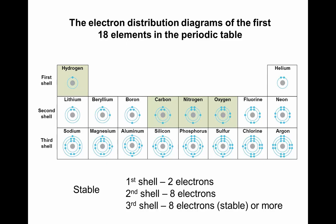Helium, with two electrons in its valence shell, is stable. Looking at carbon, it has two electrons in the first energy shell and only four electrons in its valence shell, so carbon is an unstable atom.